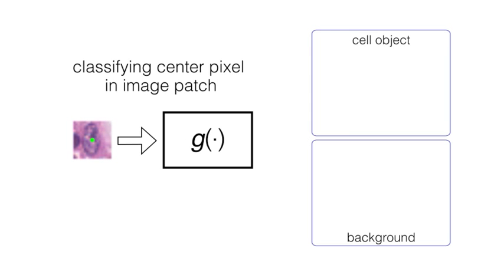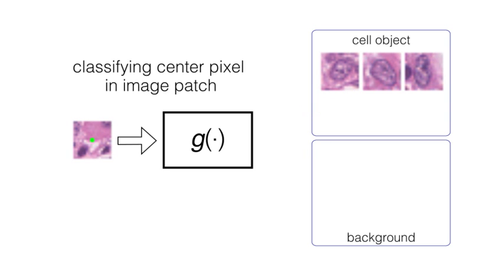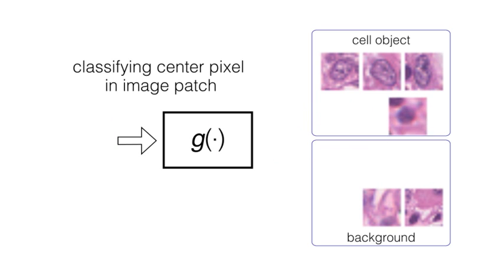In the standard approach, a binary pixel classifier can be trained to discriminate between foreground and background using image patches where the center pixel is labeled. However, predicting the probability of each image location belonging to a cell or background suffers from several drawbacks.